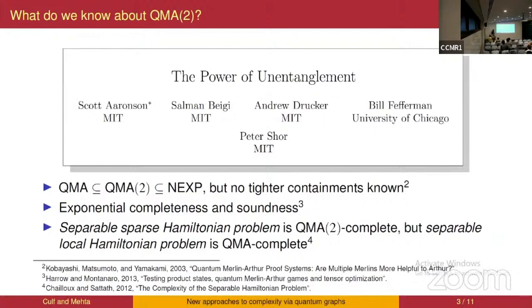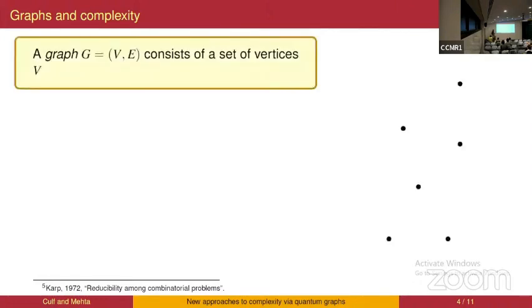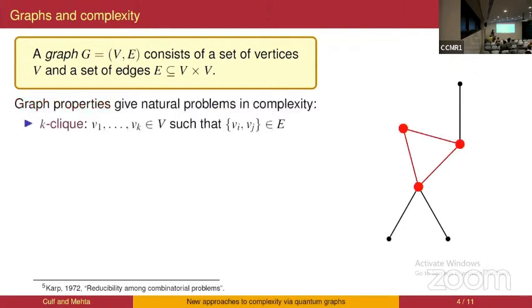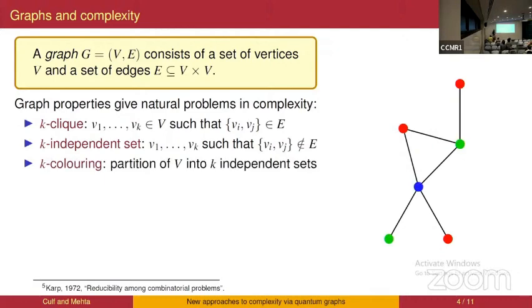I'll talk about a problem that comes from quantum graphs. Graphs are a very good source of problems in complexity theory. You can give a graph as the problem instance and ask about its properties. Very important for this work is the clique problem: given a graph, does there exist a subset of vertices where all vertices are connected to each other? Closely related is the independent set problem — given a graph, is there a set of vertices where none of them are connected to each other? Also related is coloring, where the goal is to partition the graph into a certain number of independent sets.